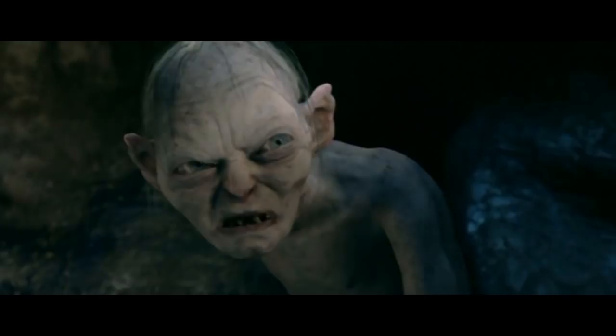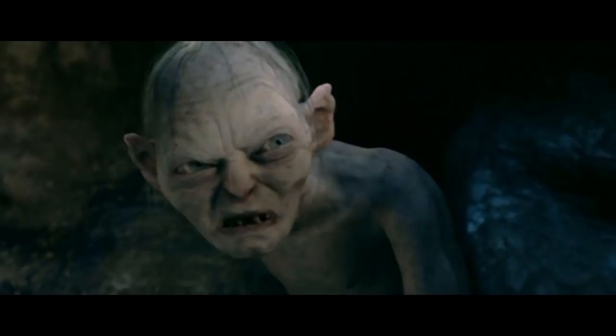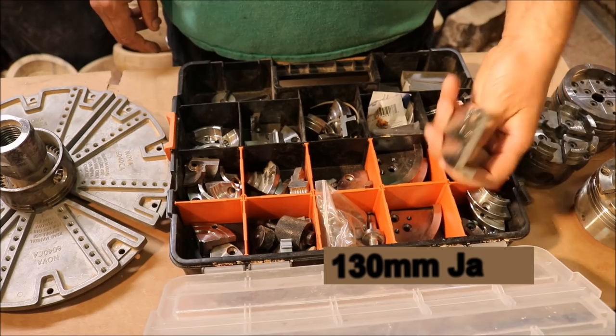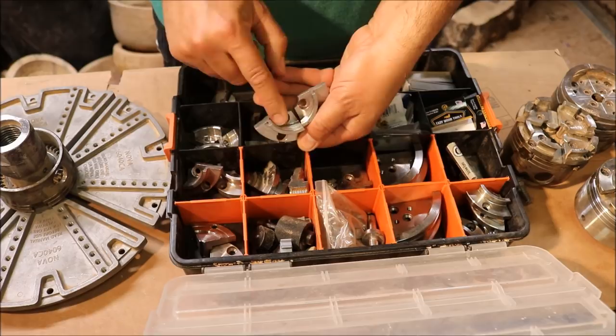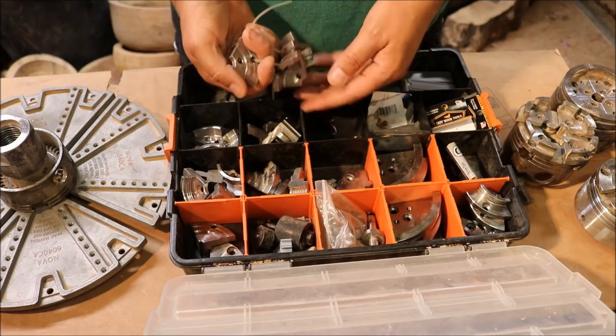I got the 130mm jaws. These ones right here are also 50mm, but they are very deep. Very deep pocket and they've got ribs on them. I have an extra pair of 70mm here. A couple more sets of 50mm because that's what you get with every one. I also put my cutting tools in here.